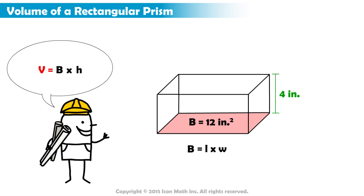This gives us V equals B times H. This formula is useful when we want to find the volume of a rectangular prism whose base area is known.